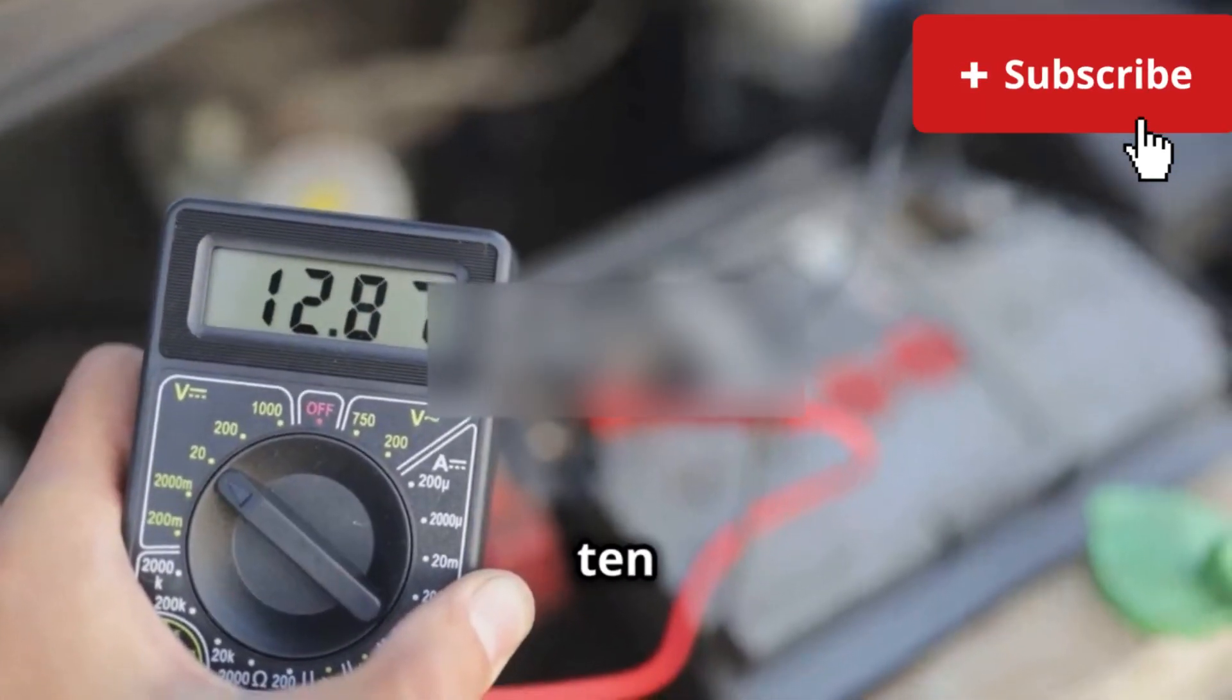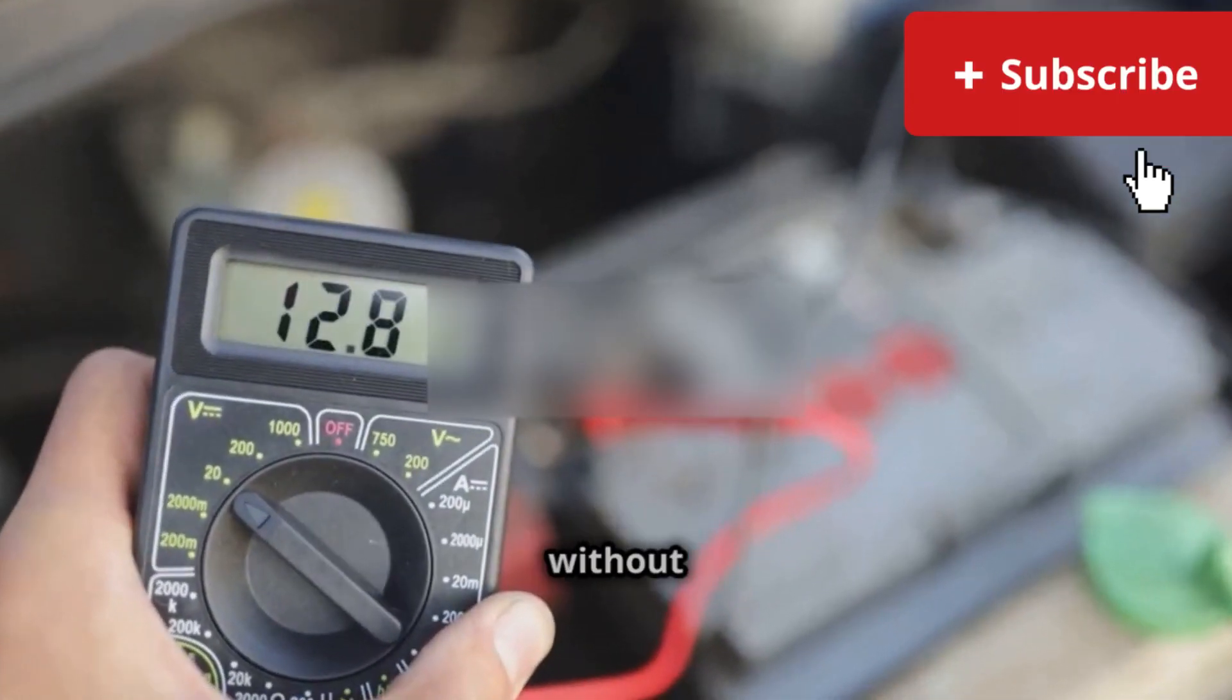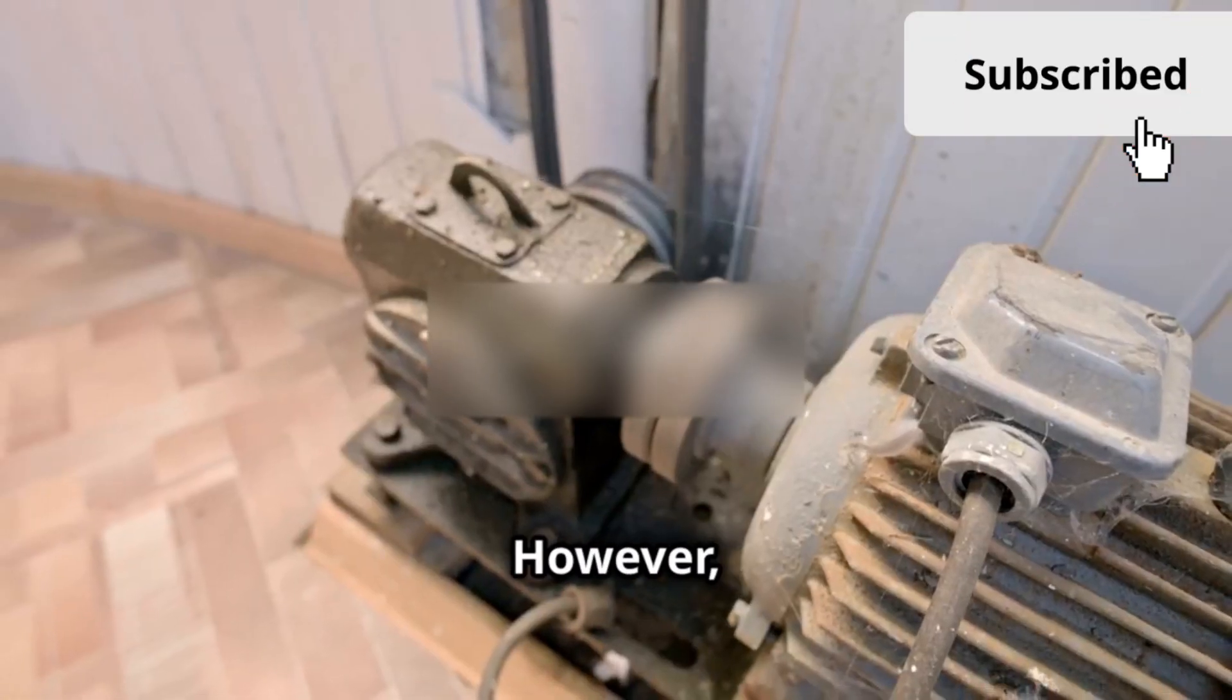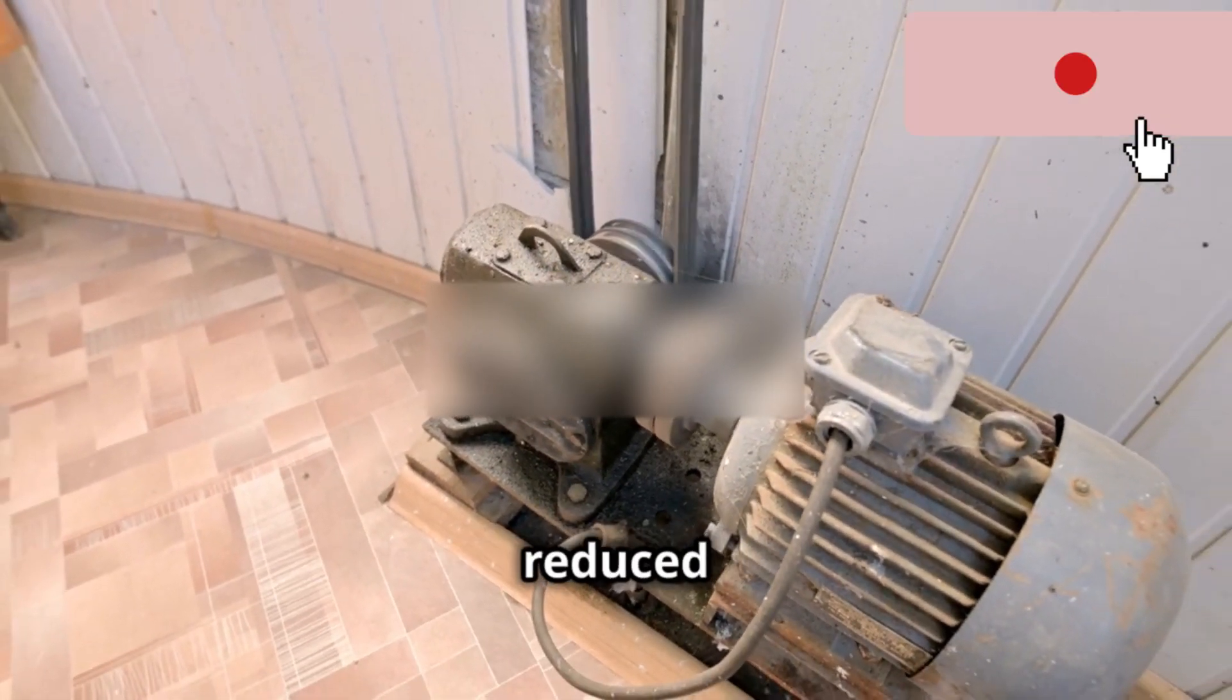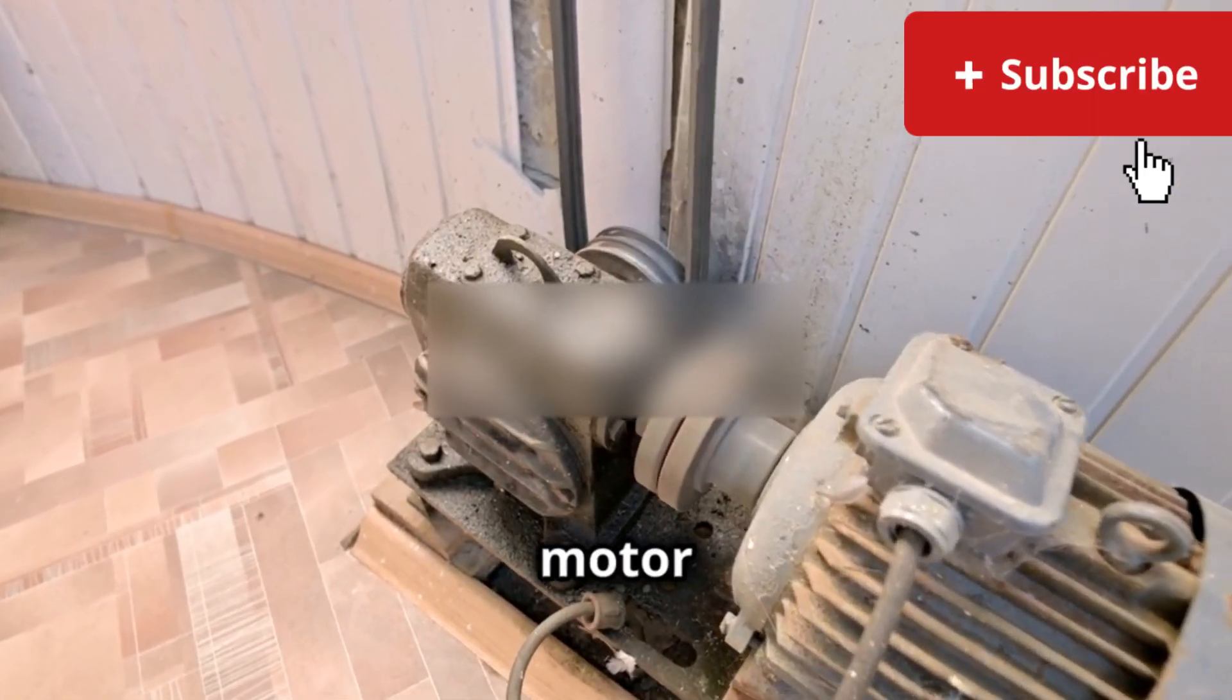However, exceeding this range can lead to serious problems such as overheating, reduced torque, and even complete motor failure. For example, if you're using a motor designed for 12 volts in a 15-volt system, you may not notice any significant issues at first.